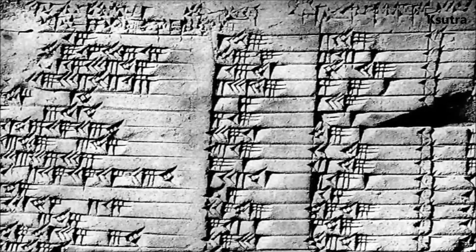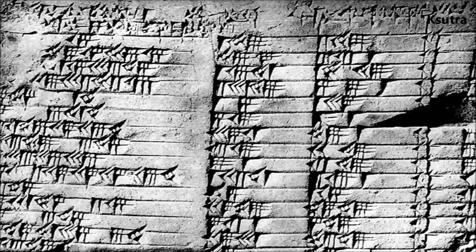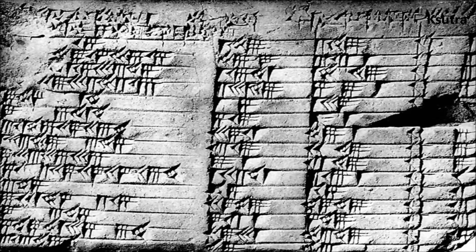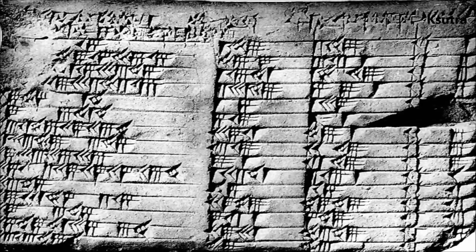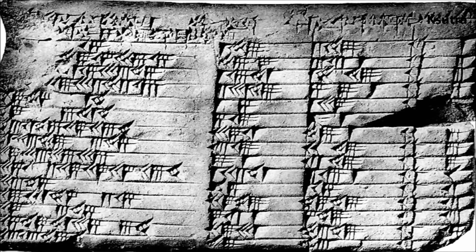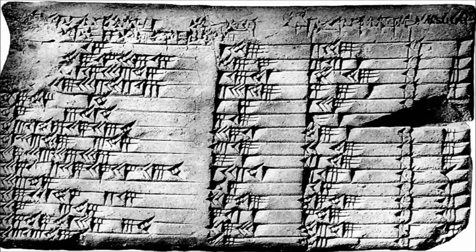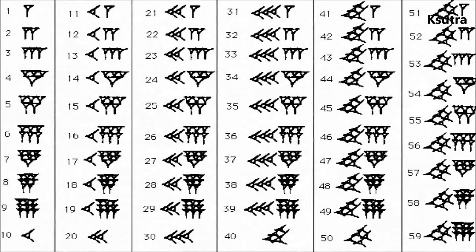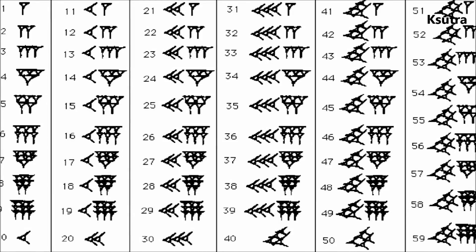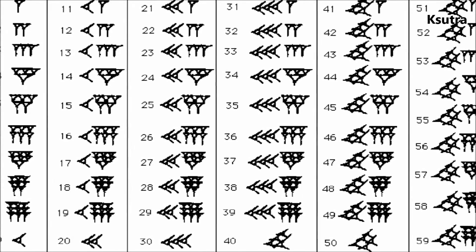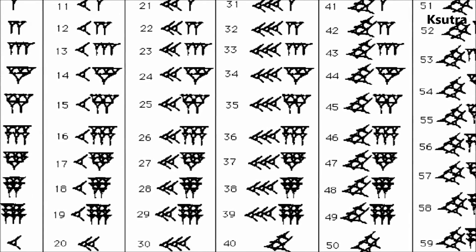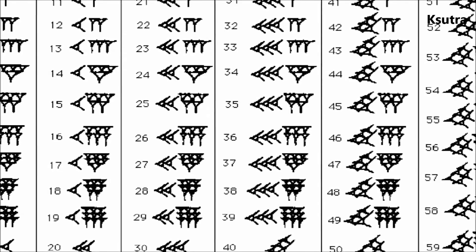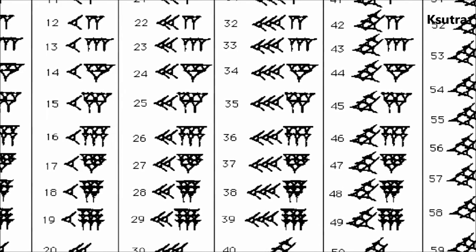By the mid-second millennium BC, the Babylonians had a sophisticated sexagesimal positional numeral system. The lack of a positional value was indicated by a space between sexagesimal numerals. However, the Babylonian placeholder was not a true zero, because it was not used alone.